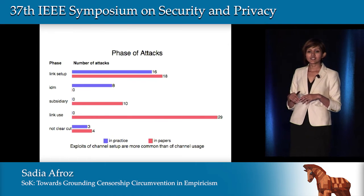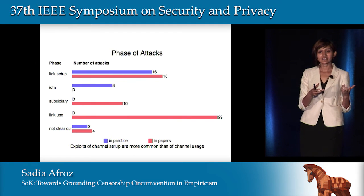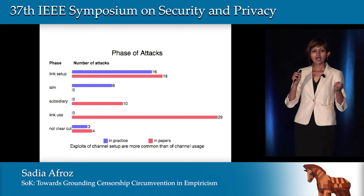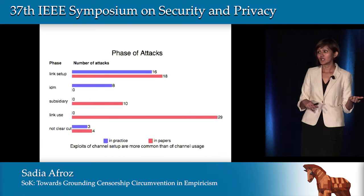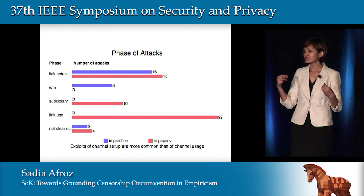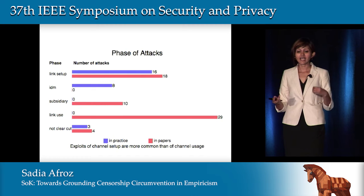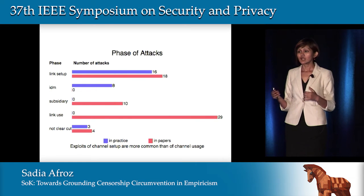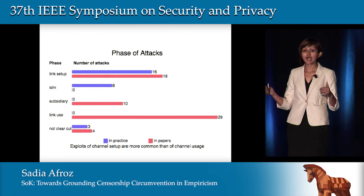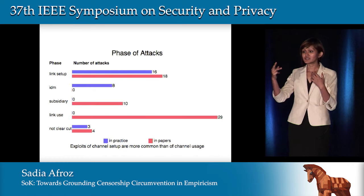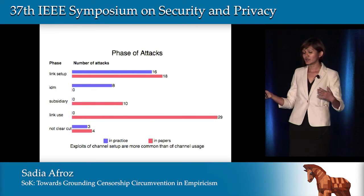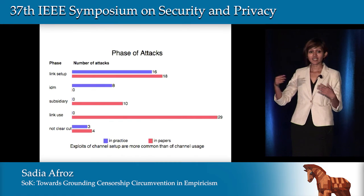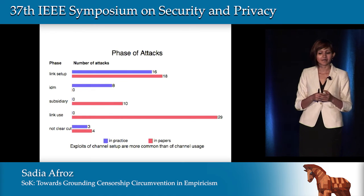We then focused on papers that attack proposed circumvention systems, to see how well those systems can be blocked by real-world censors. We contrast these research attacks with attacks seen in the real world. In this graph, red bars are attacks from research papers and blue bars are attacks from the real world. We looked at several attack properties — first, at which phase of the connection the attack happens: identifier collection, system setup, channel usage, or subsidiary attacks where the censor probes a server in its spare time.